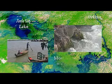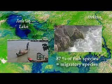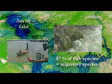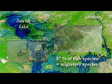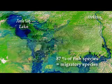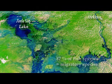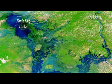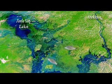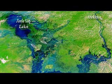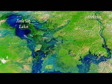On a basin scale, 87% of well-known fish species are migratory species, and many species migrate between the Mekong mainstream and the Tonle Sap.